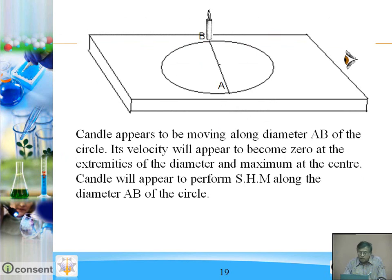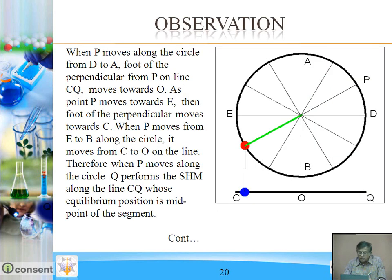The candle appears to move along diameter AB of the circle. Its velocity will appear to become 0 at the extremities of the diameter and maximum at the center, that is at mean position. The candle will appear to perform SHM along the diameter AB of the circle.